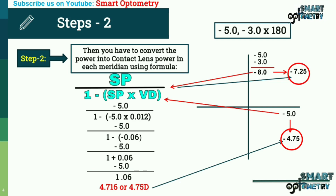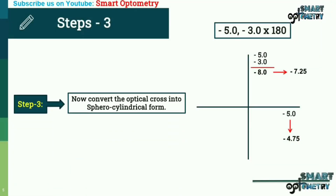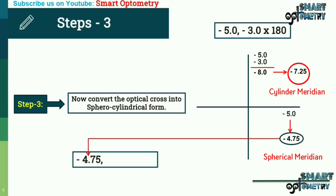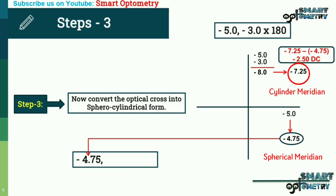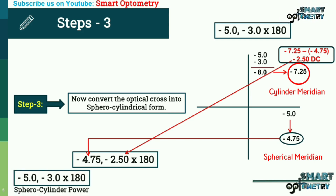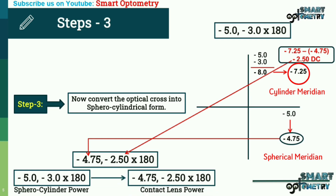Moving to Step 3: considering the horizontal meridian as the spherical meridian and vertical as the cylindrical meridian, the spherical power is -4.75D. Subtracting the spherical power from the cylindrical meridian gives -7.25 minus (-4.75) equals -2.50D cylinder. The final sphero-cylindrical contact lens power is -4.75 sphere with -2.50 cylinder at 180 degree axis. So the original power of -5.00 / -3.00 × 180 converts to -4.75 / -2.50 × 180 in contact lens power.